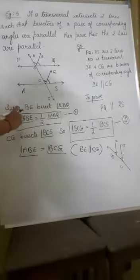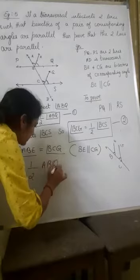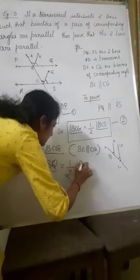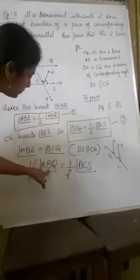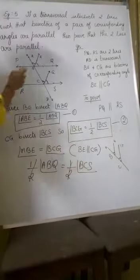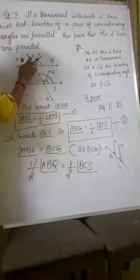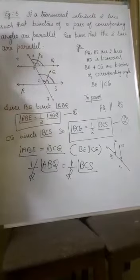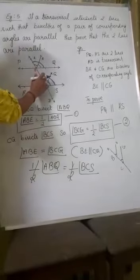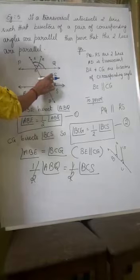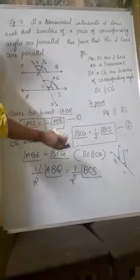So, since angle ABE equals angle BCG, we have half of angle ABQ equal to half of angle BCS. The halves cancel, which means angle ABQ is equal to angle BCS. But ABQ and BCS are corresponding angles of lines PQ and RS. Now we have proved the corresponding angles are equal. So, by the converse of the corresponding angle axiom, since they are equal, PQ should be parallel to RS. That is the conclusion.